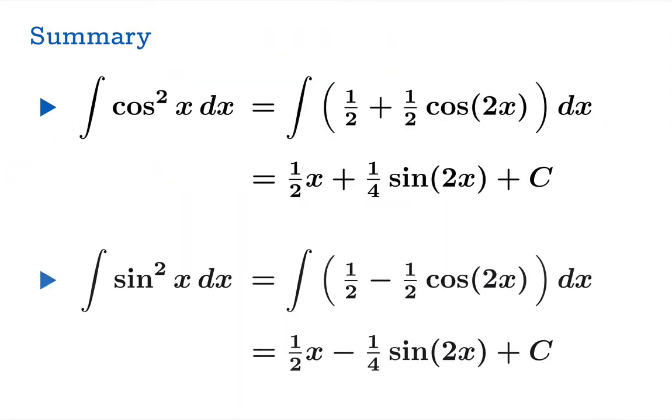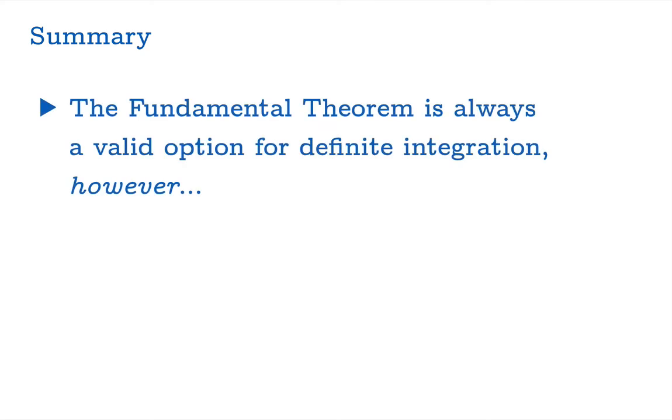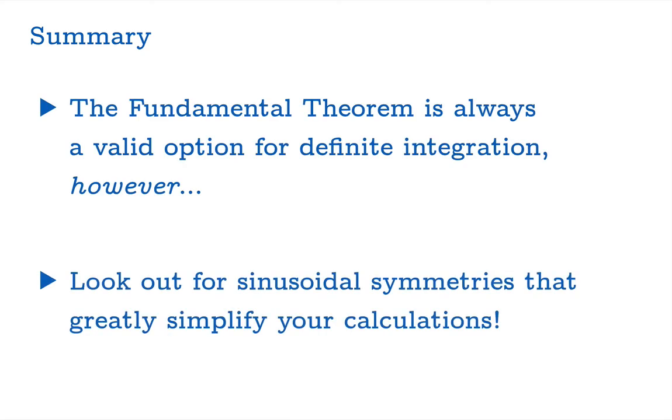So, the antiderivative of cos²(x) and sin²(x) can easily be obtained through the double angle formula for cosine. If you need to use the fundamental theorem, then you can use the fundamental theorem for definite integrals. But keep your eyes open for symmetry to make your definite integration much simpler.